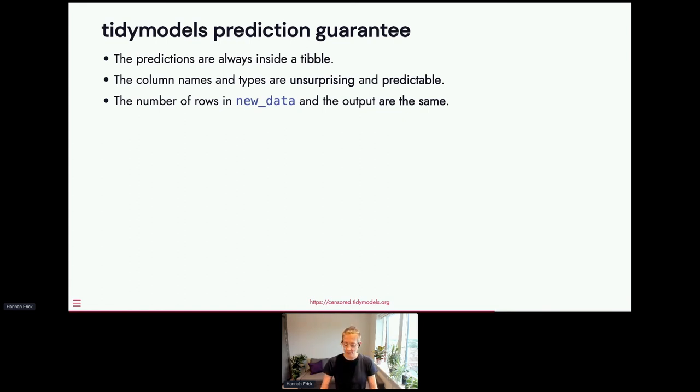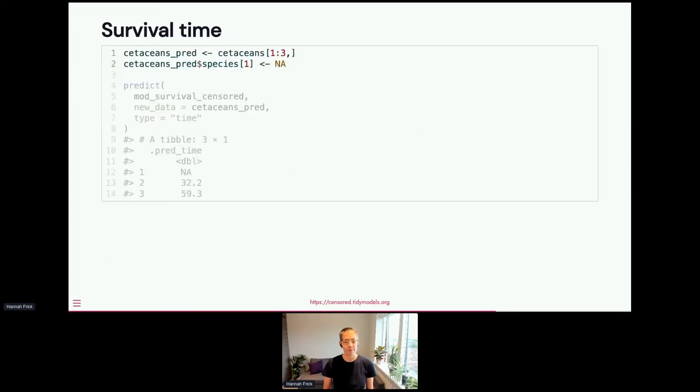So what's new? Those are additional prediction types. The first one that we're going to look at is survival time. So I've taken the first three rows here as a toy dataset or a small one that we can predict on. Just to spice things up a little bit, I'm making that first entry for species NA. And what you need to predict is the predict function, the model, the new data that you're predicting on and you need to set the type. So for survival time, that type is called time and you get a tibble back. It has a column .pred_time. They're typically named .pred or .pred_ the specific type. And because it was three rows that we had originally, it is three rows that we get back, even though one of them is NA.